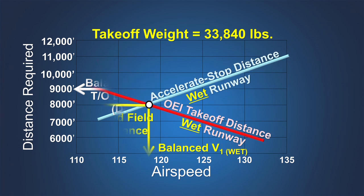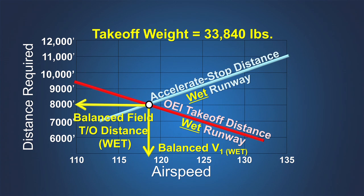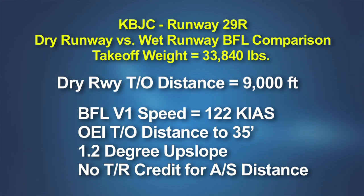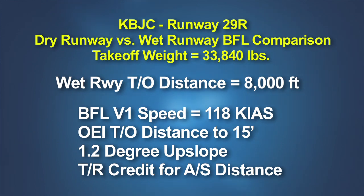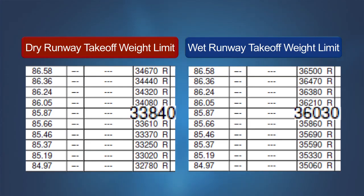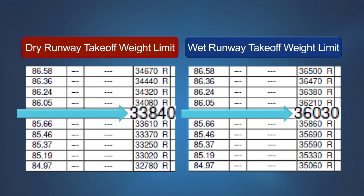However, at this same weight, the balanced field takeoff distance on a wet runway is only 8,000 feet. The reduced screen height and credit for use of thrust reversers in determining wet runway takeoff performance can in some cases actually produce a situation where, at a given takeoff weight, the wet takeoff performance appears to be better than the dry runway performance. This can lead to a situation where the wet runway analysis produces greater takeoff weights than the dry analysis, but the certification rules have an additional requirement to address this situation.